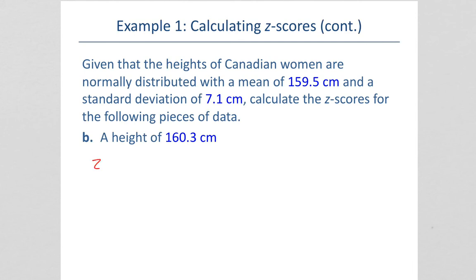For a height of 160.3 centimeters, we would subtract our mean and divide by the standard deviation and get approximately 0.11. We are 0.11 standard deviations above, since it's positive, the mean. This person is slightly taller than average.